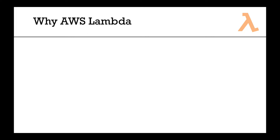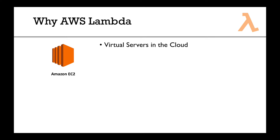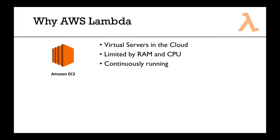So what is AWS Lambda? We had servers, and the AWS service for that is called EC2. You basically rent virtual servers in the cloud — you specify some RAM, maybe two gigabytes, and a CPU type, and they give it to you. The instance runs continuously, and you get billed by the hour. Even if you start and stop it quickly, you still get billed for one hour.